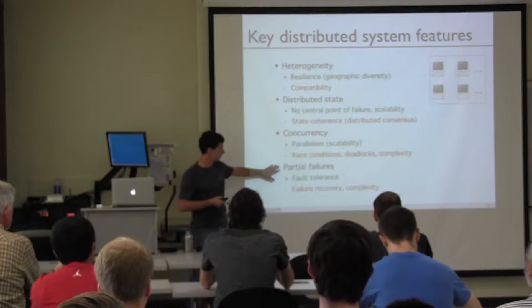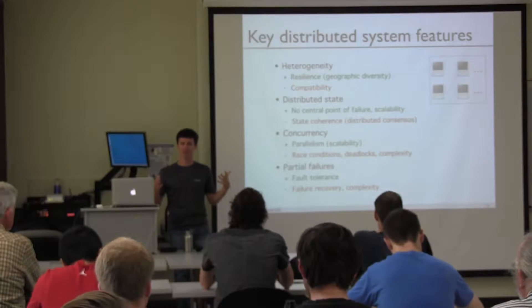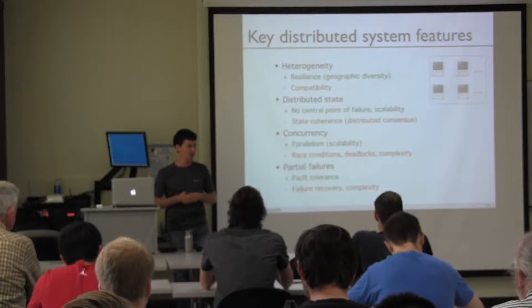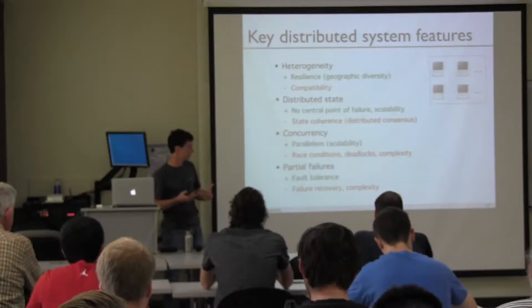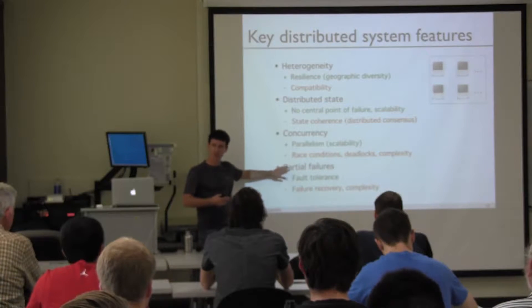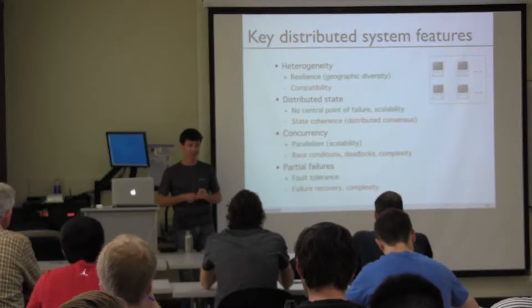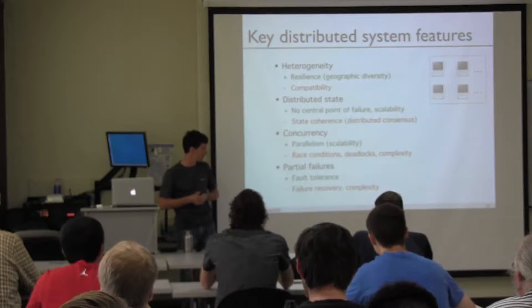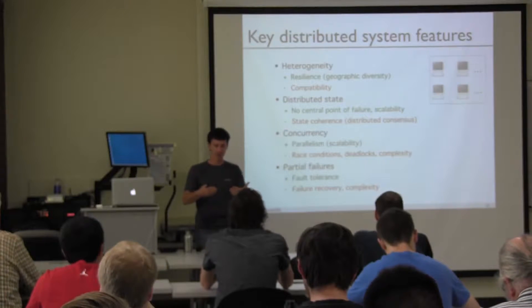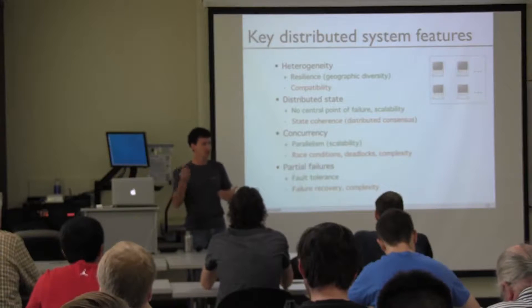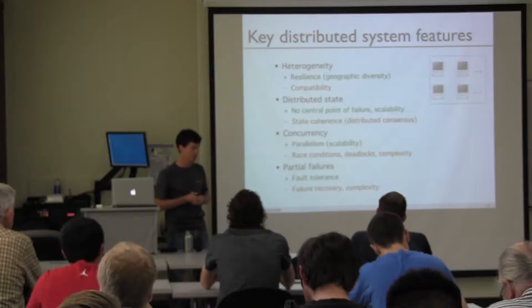The last feature is partial failures. When you include more machines, the likelihood of some machine failing actually goes up. If your system includes a thousand machines, like some systems at Google, you have failures all the time — every day. On the one hand this is a problem, but on the other hand it's only a partial failure: as one machine fails, the rest of your system can keep going. So as you add more machines you actually make the system more fault tolerant, even though the overall number of failures increases. The drawback is that you have to design this failure recovery — how do you keep going as a distributed application even though some machines keep failing?